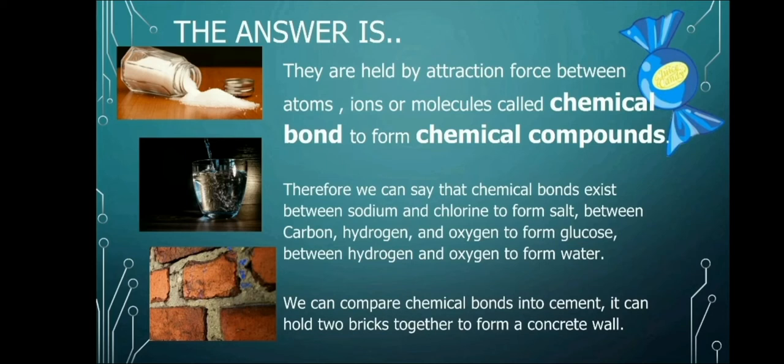Therefore, we can say that chemical bonds exist between sodium and chlorine to form salt, between carbon, hydrogen and oxygen to form glucose, and between hydrogen and oxygen to form water. We can compare chemical bonds into cement. It can hold two bricks together to form a concrete wall. So imagine the cemento that holds the hollow blocks is the chemical bonds.